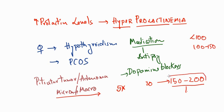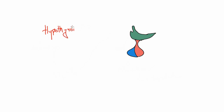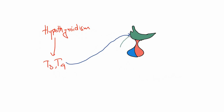Whenever you see a significant increase in prolactin levels, you always need to rule out the possibility of a pituitary tumor. Another most common cause for increased prolactin is hypothyroidism — a condition where there is a decrease of T3 and T4 levels. As a result, the hypothalamus is stimulated to produce more thyroid releasing hormone (TRH), which then stimulates the anterior pituitary.